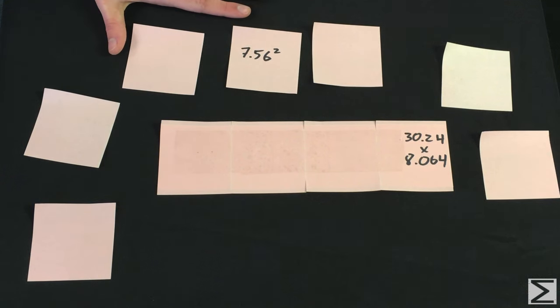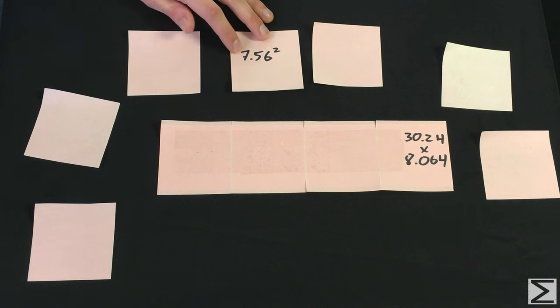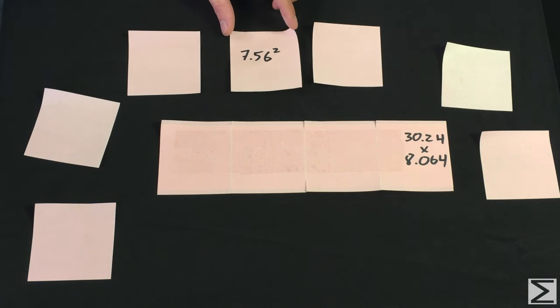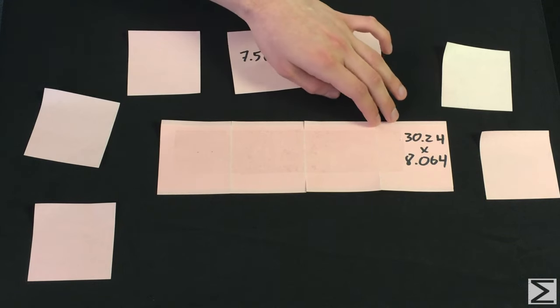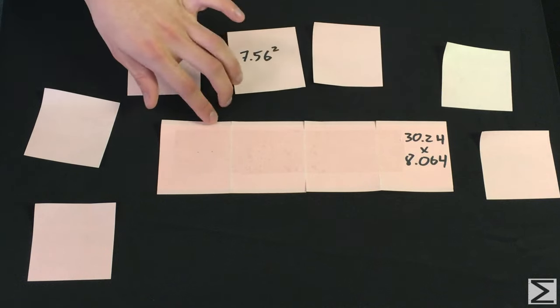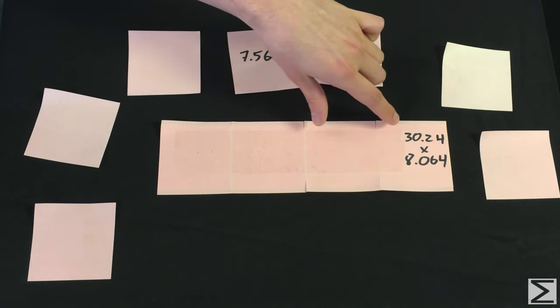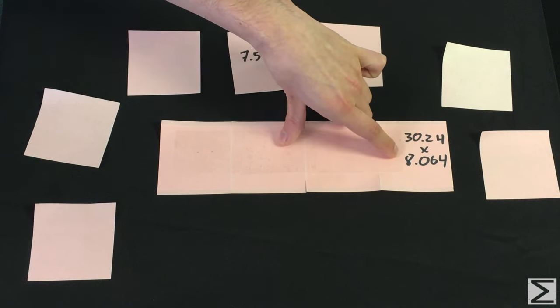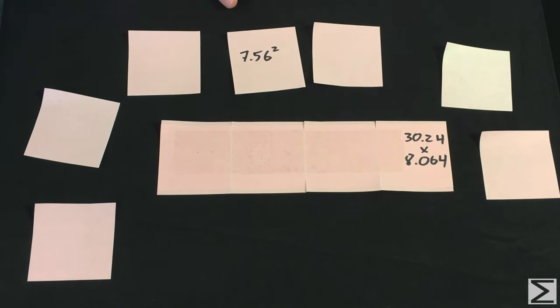So here we have our two-scale replica of the problem in question. We are using 7.56 by 7.56 centimeter squares of post-it notes, and each post-it note is placed across four and extended a little with another post-it note to make a rectangle of 30.24 by 8.064 dimension full rectangle. And I believe that's about 3.9 something times smaller than the rectangle we're using.